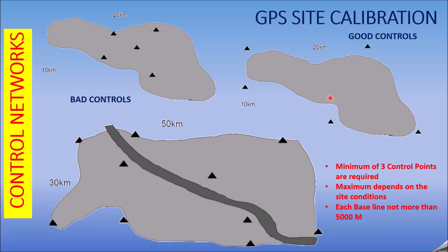There are a few considerations when using site calibration. Your control points should be available on the site, perfectly measured and equally distributed. This is an example of a badly distributed set of control points. Your control points should be on the periphery of the site — these are the major or primary control points. You can also establish any number of control points inside the site, called intermediate points.